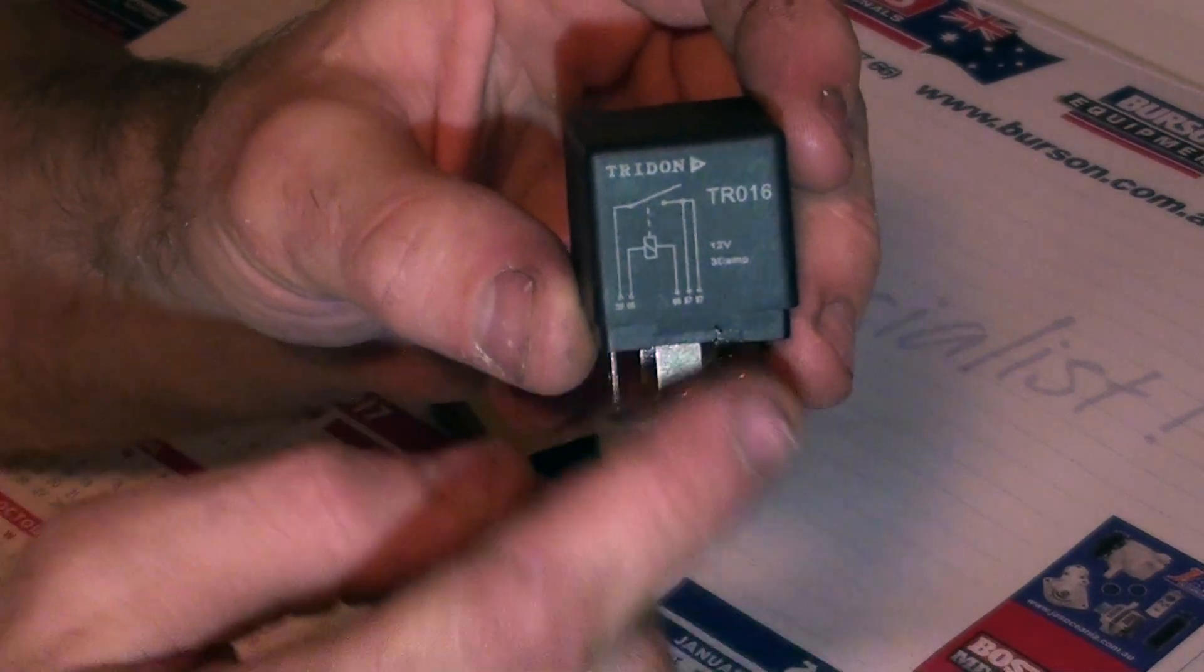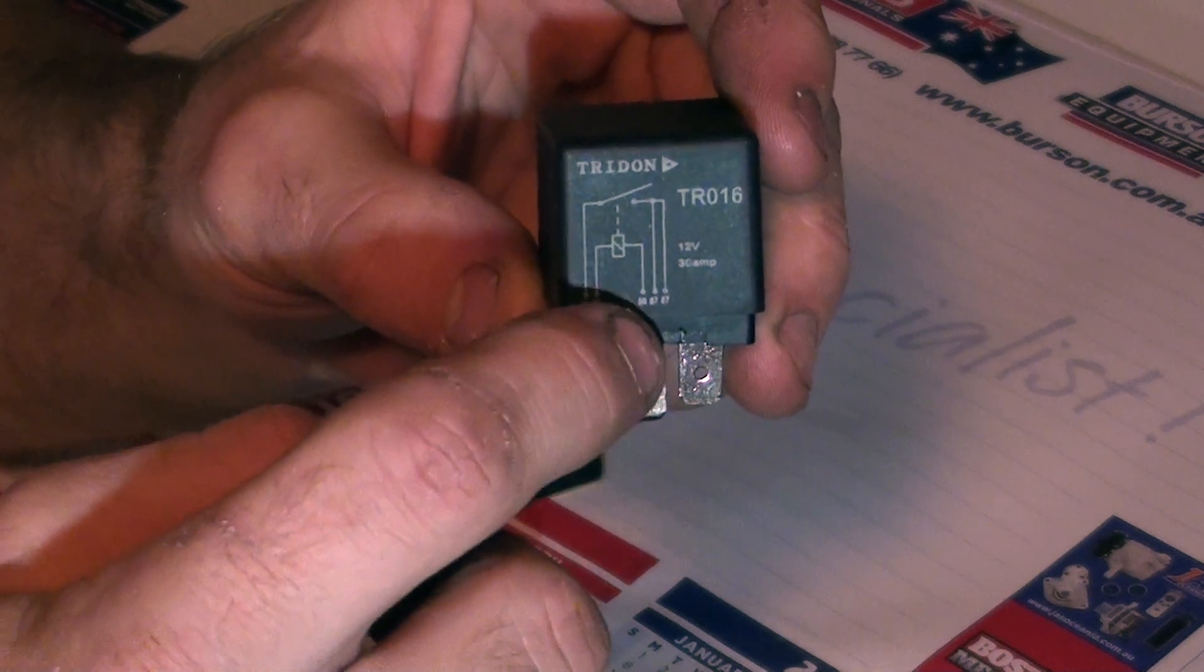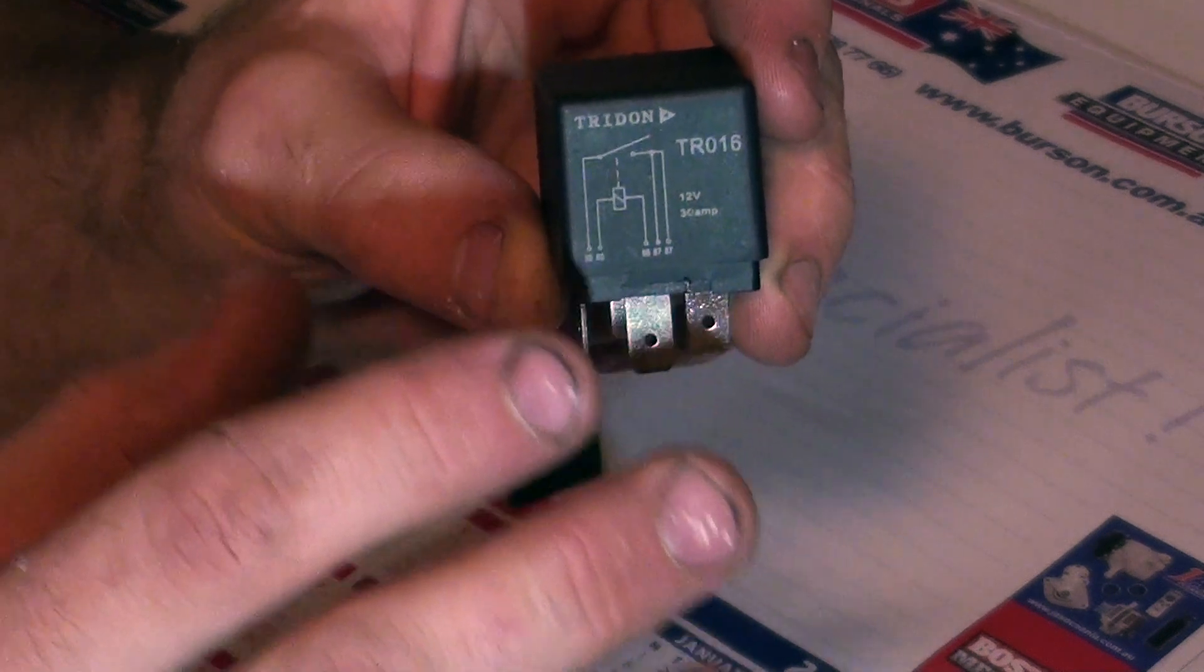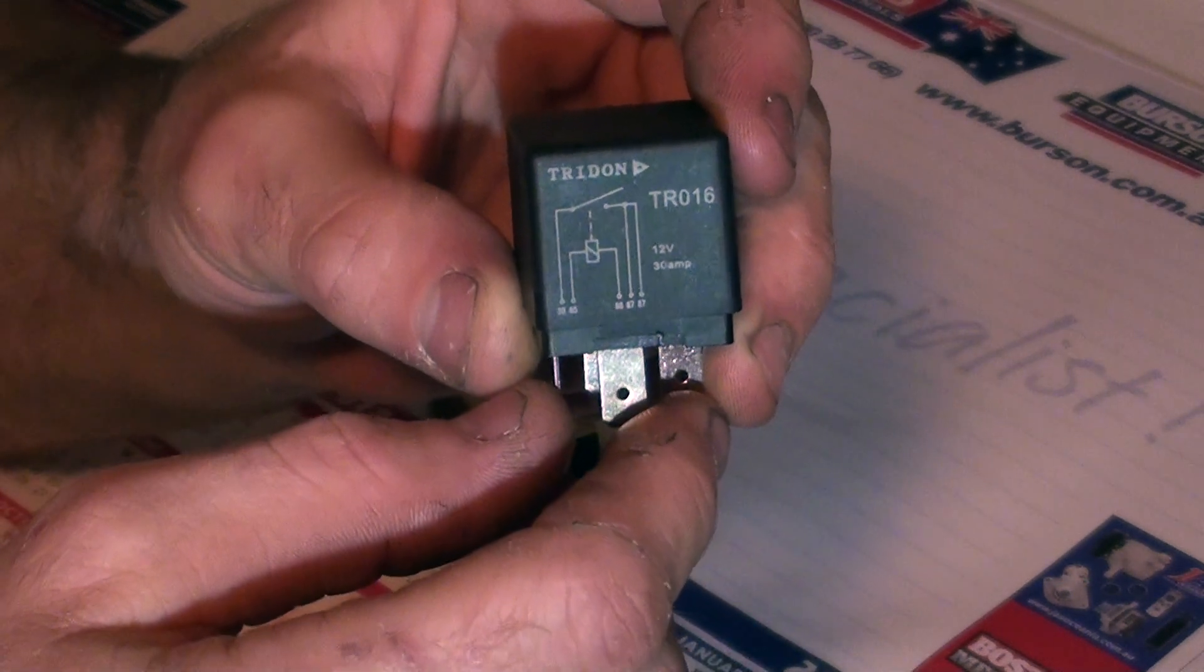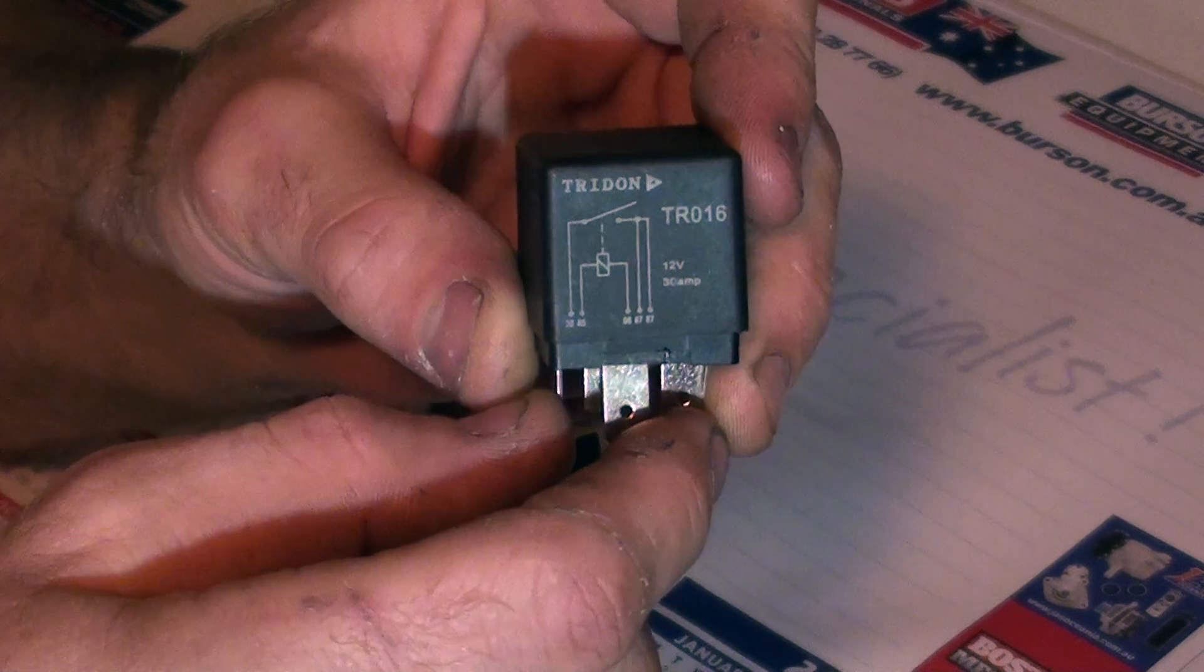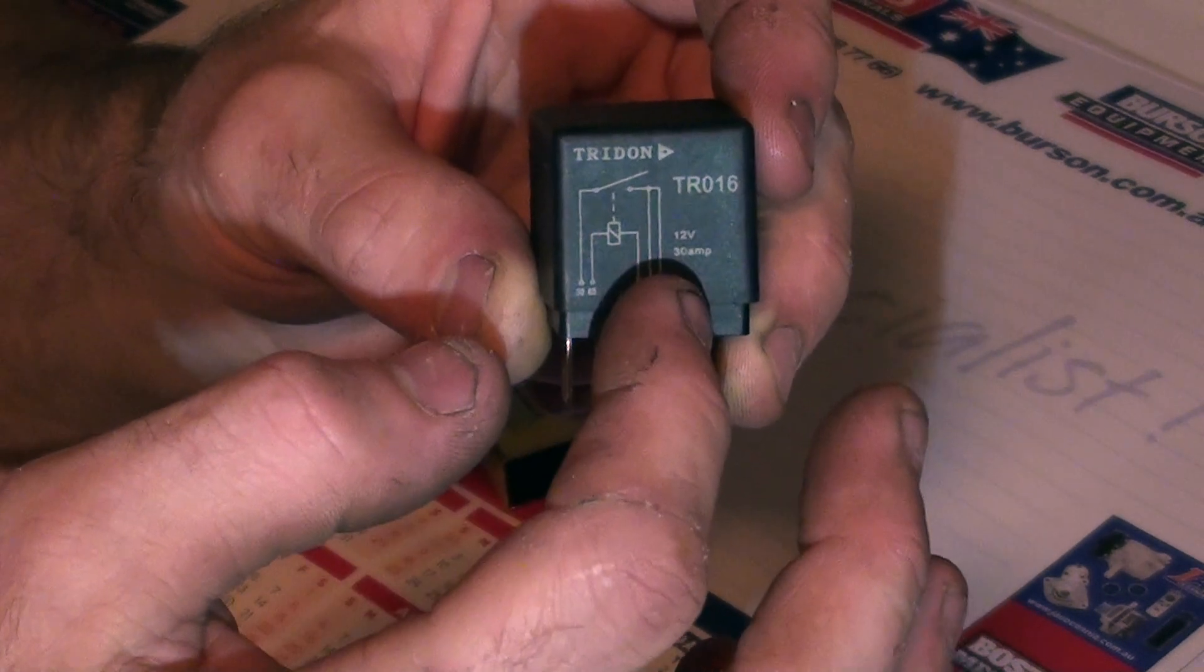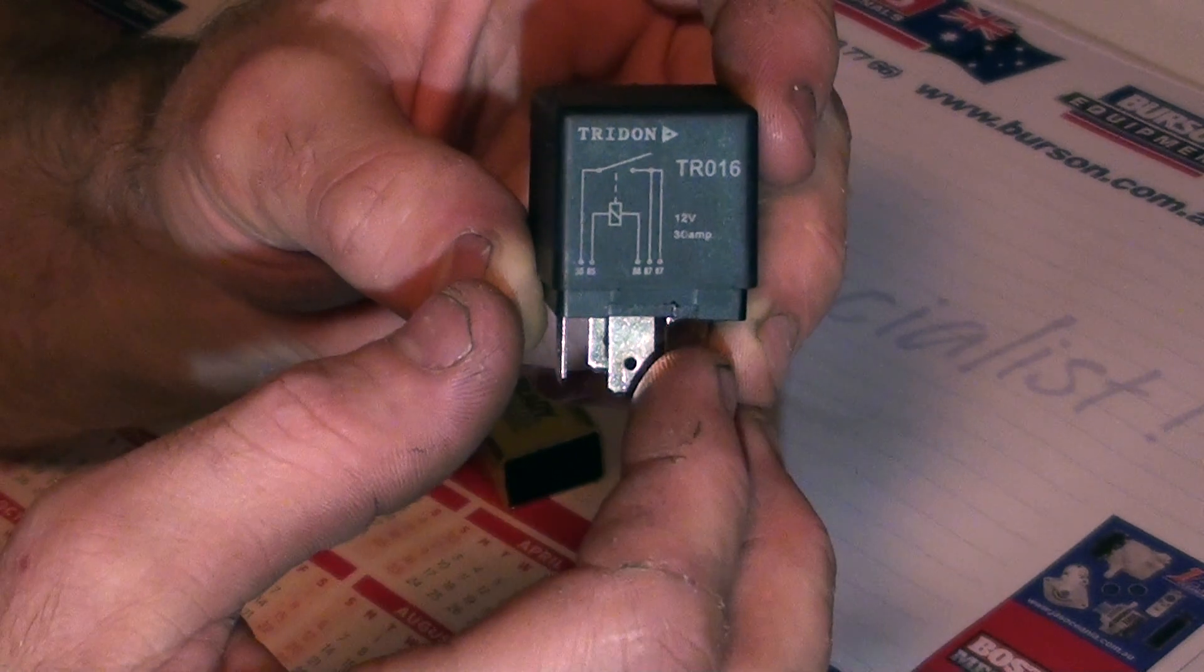So the good thing about relays is it's a small current switching a larger current. So you don't have to have the large current running through a switch. You can have it running through the relay. So you're never going to burn out a switch or overload the circuit.